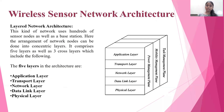Wireless Sensor Network Architecture - Layered Network Architecture: This kind of network uses hundreds of sensor nodes as well as base stations. The arrangement of network nodes is done into concentrated layers. It comprises five layers as well as three cross layers, which include the application layer, transport layer, network layer, data link layer, and physical layer.